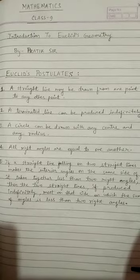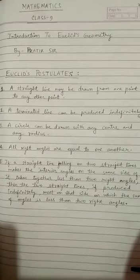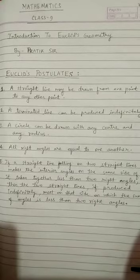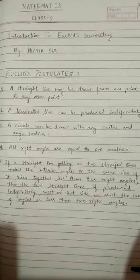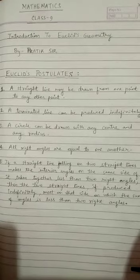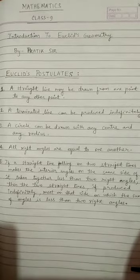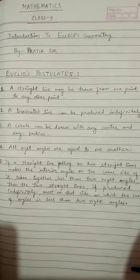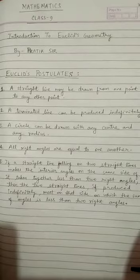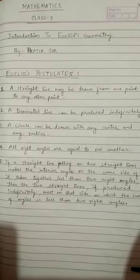The second postulate is: a terminated line can be produced indefinitely. As we already know, there is a difference between a line and a line segment. A line segment means a fixed length — for example, 4 cm means 4 cm only, not less, not more. But a line can be of any length, so a terminated line can be produced indefinitely because a line has no fixed length.